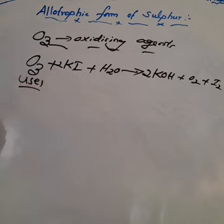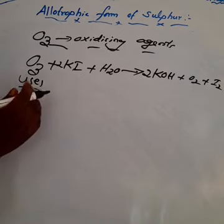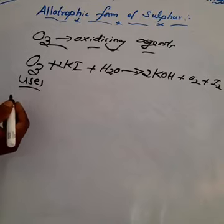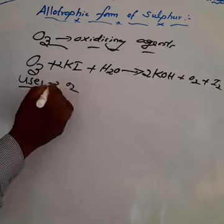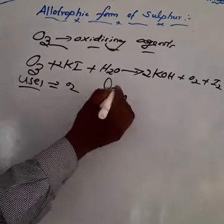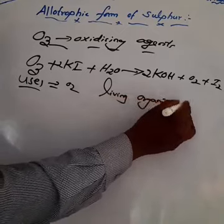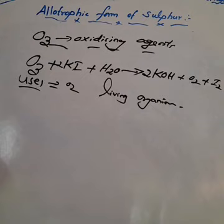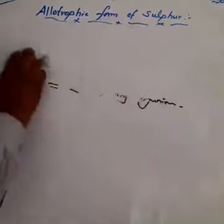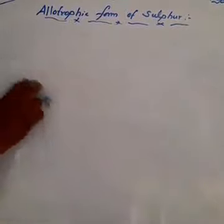Uses: oxygen is an essential component for living organisms for breathing. It is used in welding. Liquid oxygen is used as fuel in rockets.